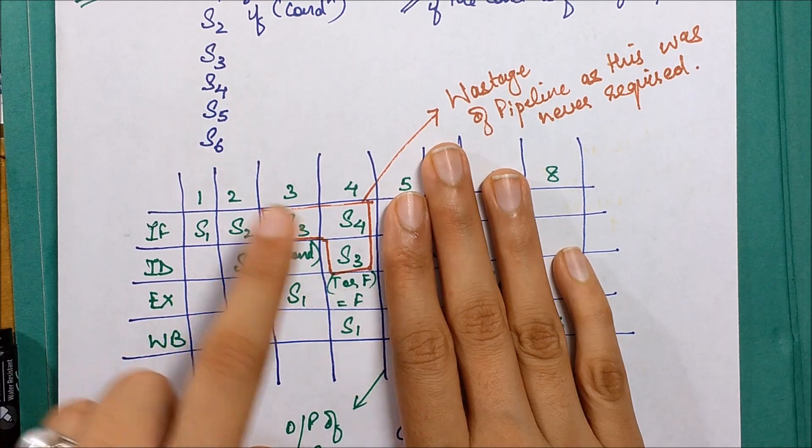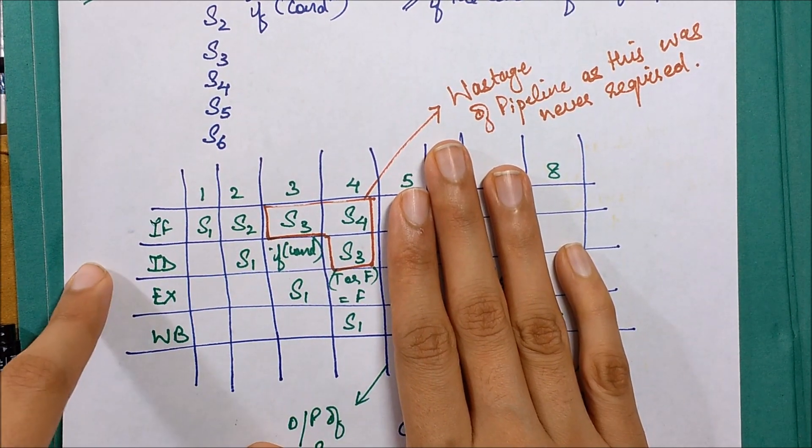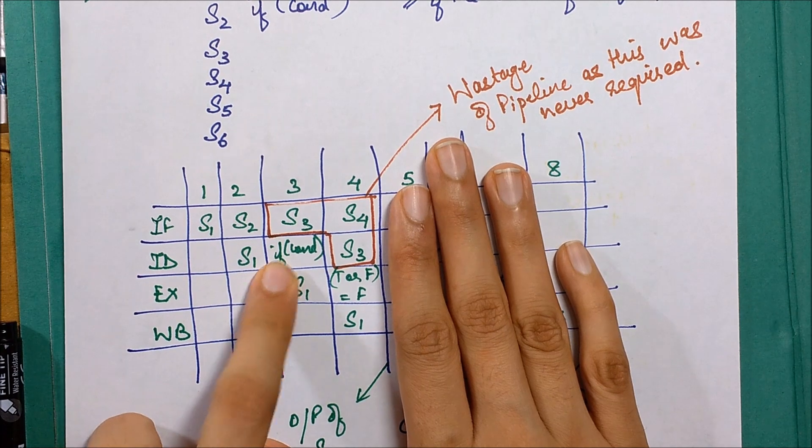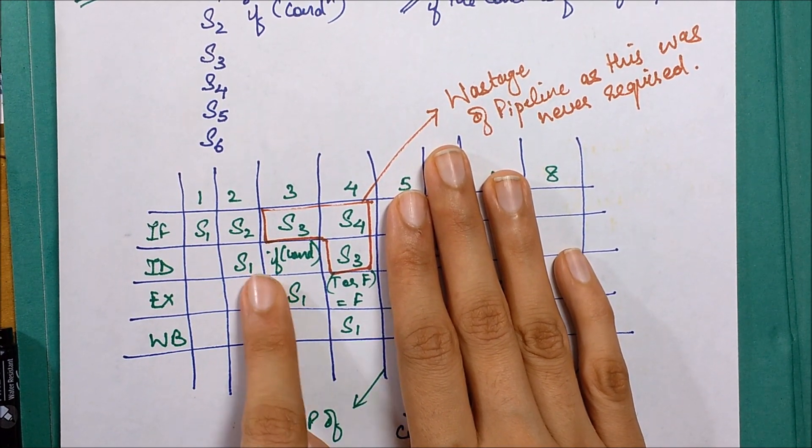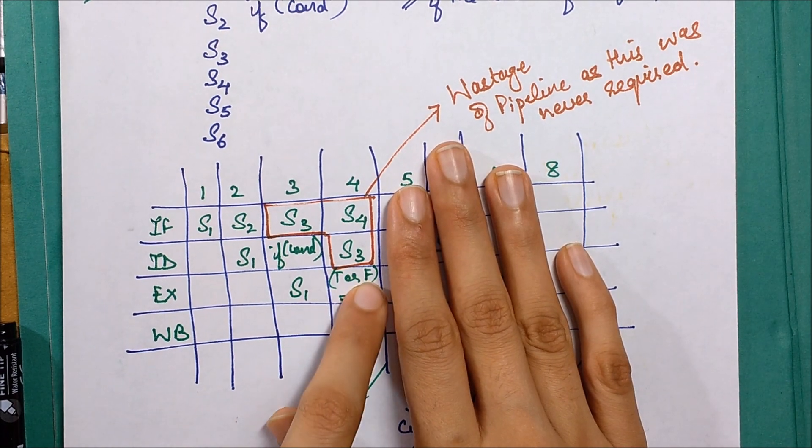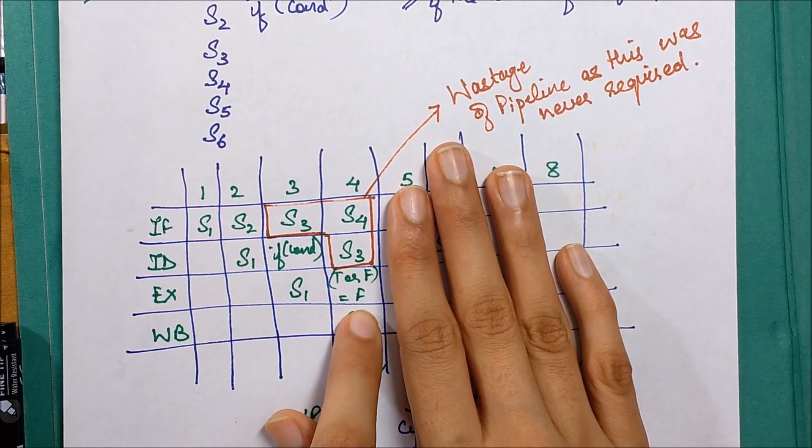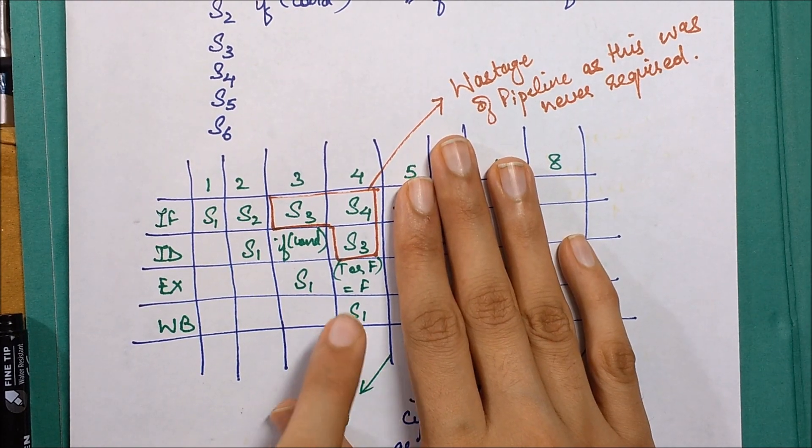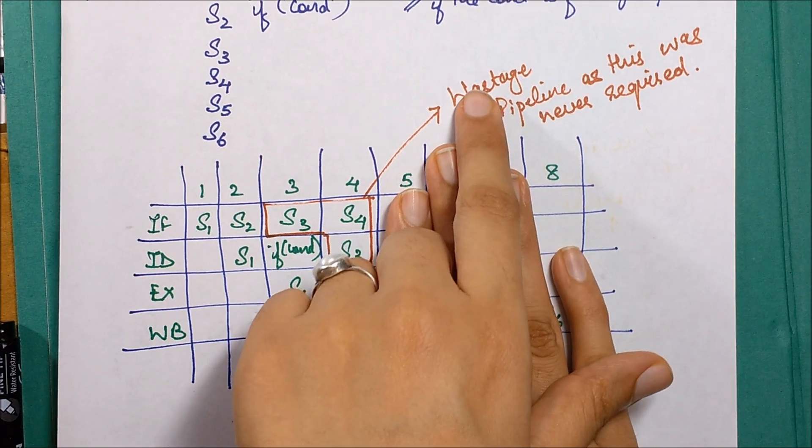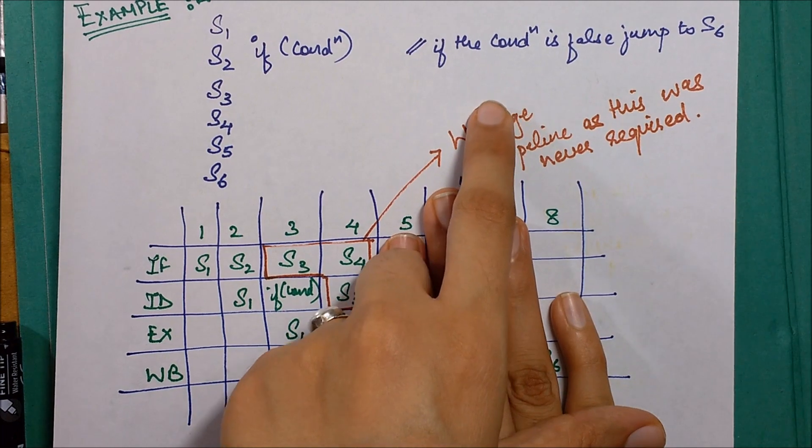We start the ID phase of S3, we start the execution phase of S2 which was if condition, so we try to evaluate this condition true or false and let's say the result was false. Also we write back the results of S1. Now we have specified in the question that if the condition is false then jump to S6.